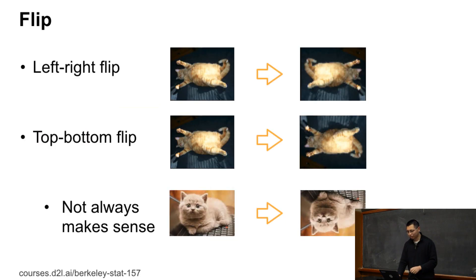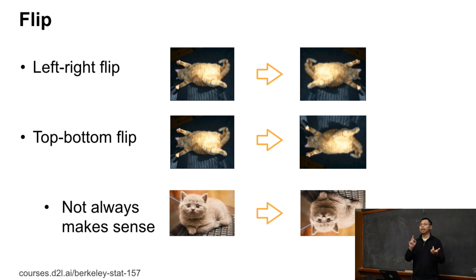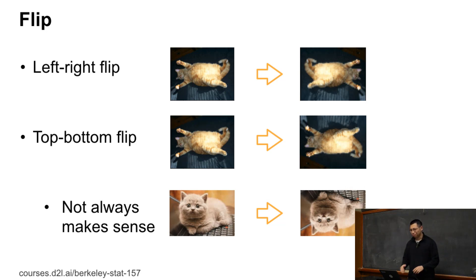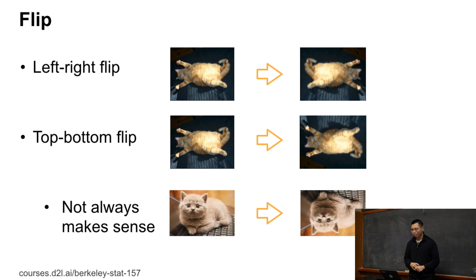Let's cover several commonly used augmentation techniques. The first is flip. You can randomly flip an image left to right, and also top to bottom. Top-to-bottom flip doesn't always work — for example, a cat can't sit on the ceiling, and you can't put the sky on the bottom and the ground on top. But sometimes it works.